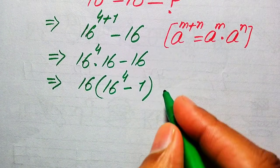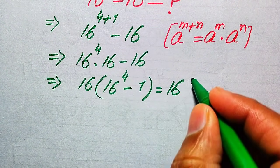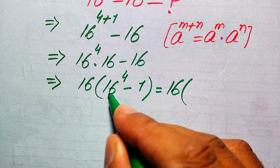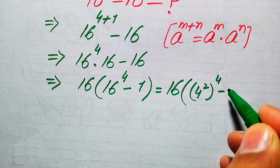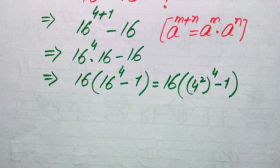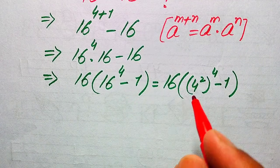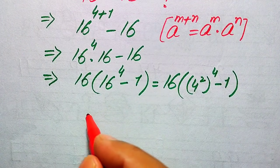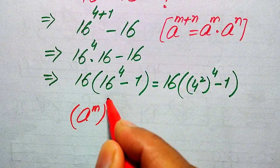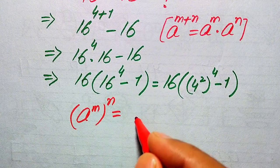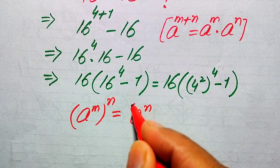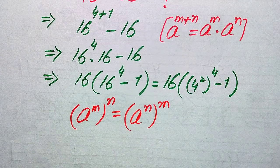We rewrite this expression as 16 into 16 to the power of 4, and we write the base 16 as 4 squared, with its whole power being 4. Then we use another exponential law: if you have a to the power of m to the power of n, we interchange the two exponents and write it as a to the power of n to the power of m.